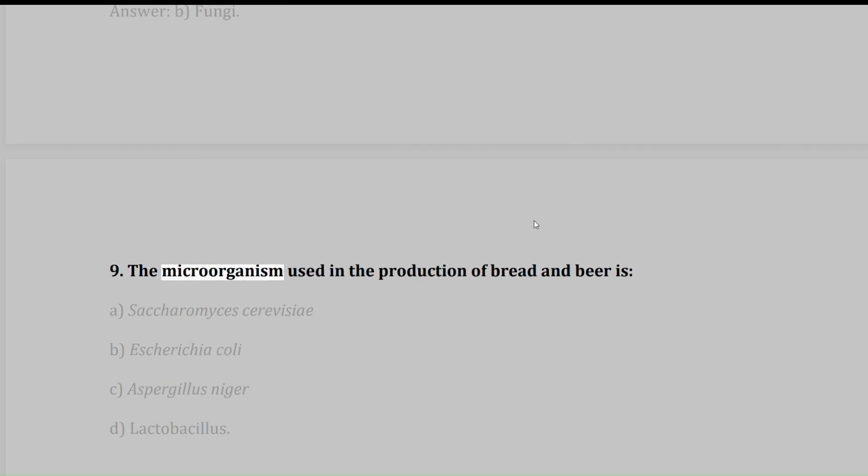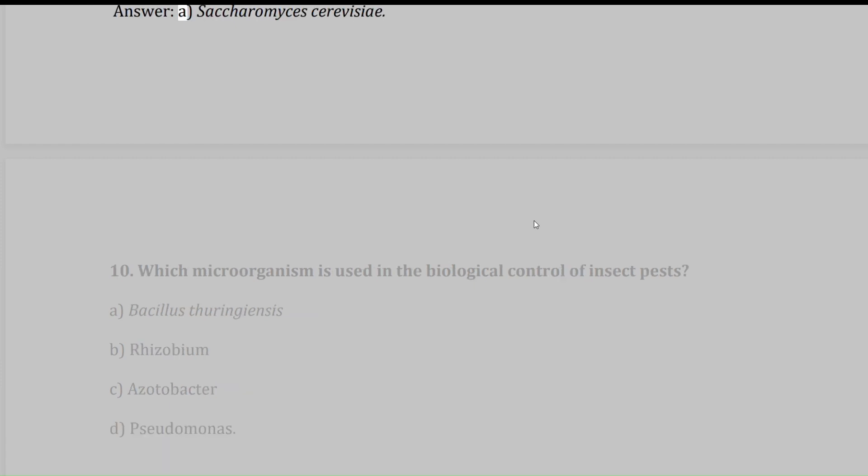9. The microorganism used in the production of bread and beer is: A. Saccharomyces cerevisiae, B. Escherichia coli, C. Aspergillus niger, D. Lactobacillus. Answer: A. Saccharomyces cerevisiae.